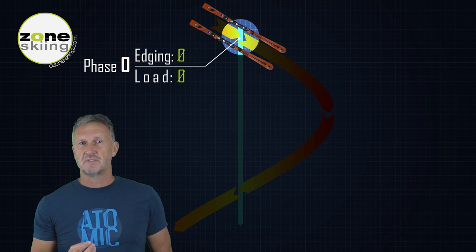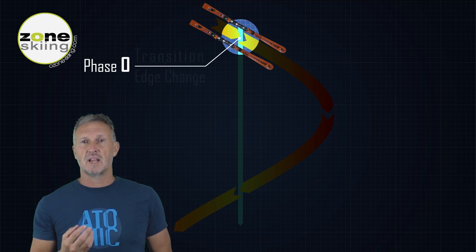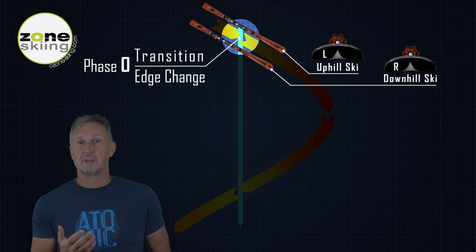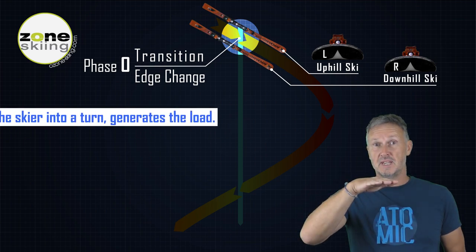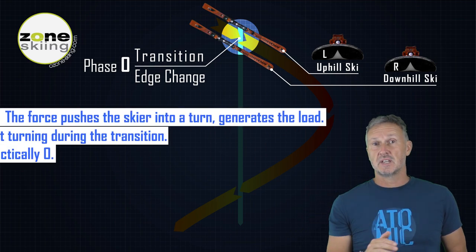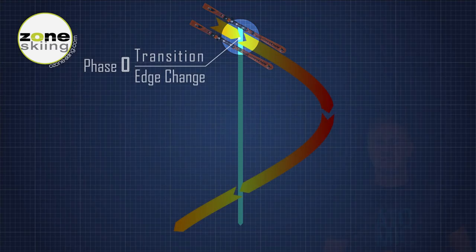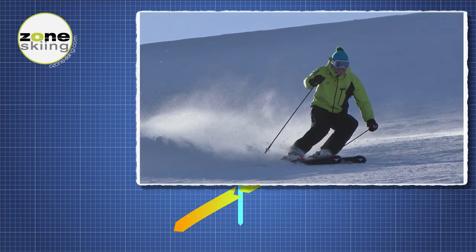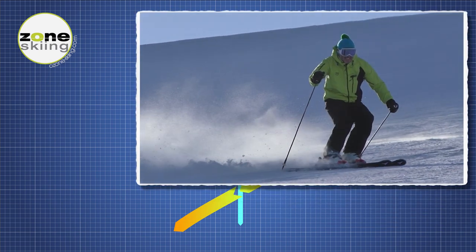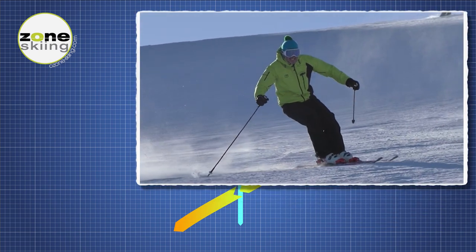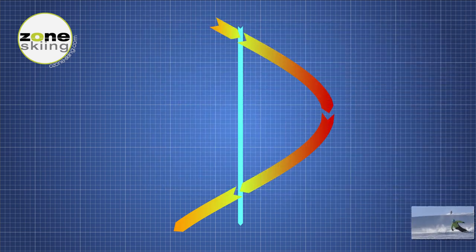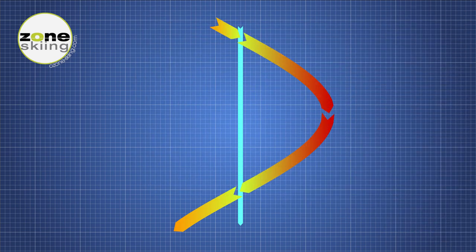In this short and unbalanced phase, the skier is gliding straight to the side — ergo, not turning. The skis are flat on the base and the edge angle is zero. Because the essential load in the turn comes from the edges of the ski, the load is practically zero. We cannot speak about inside or outside ski here; it is better to use the uphill and downhill terms.